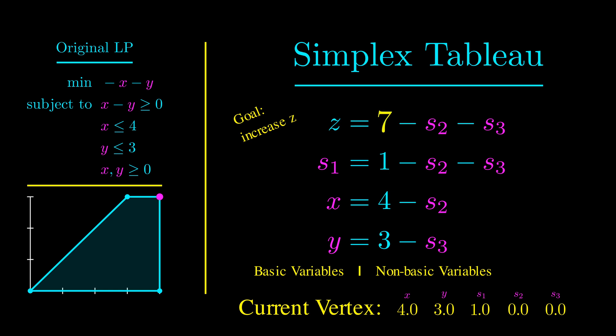The optimal value is 7, which we can read straight from the tableau. And the optimal point is that x equals 4, y equals 3. Note that we traveled across the bottom edge and up the right edge of the feasible region. Simplex essentially travels along the edges of the feasible region until it reaches the optimal point.